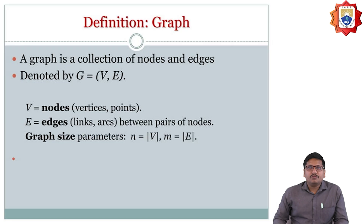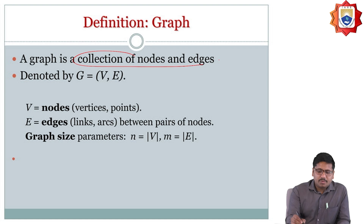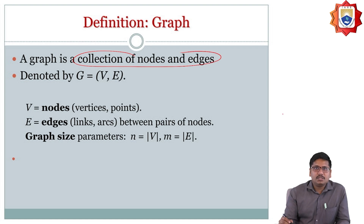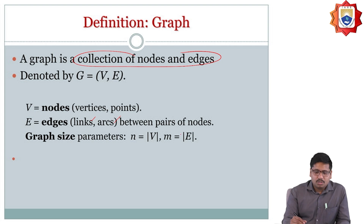When it comes to the basic concepts of graph theory, the very first definition is that a graph is nothing but a collection of nodes and edges, and it should be denoted by G equal to (V, E). Where V should be the nodes and E should be the edges, also called as links or arcs between the pairwise of nodes. Graph parameters: n equals number of vertices and m equals number of edges.